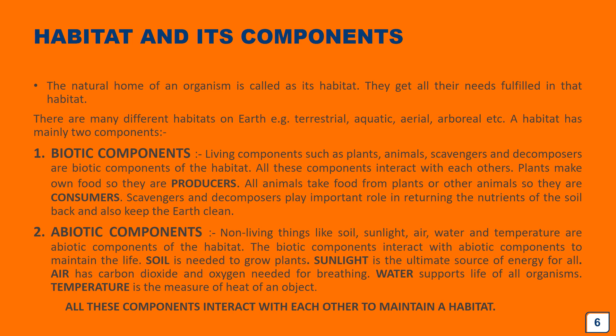All non-living things in the habitat — like soil, sunlight, air, water, and temperature — are called the abiotic components of the habitat. Note that these are not your furniture or household objects; abiotic components refer specifically to the non-living elements of an organism's natural home. All these components are dependent on each other and also interact with the biotic components to maintain the habitat.